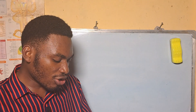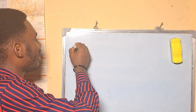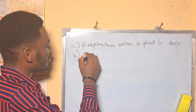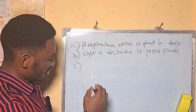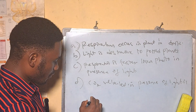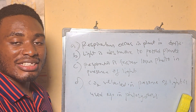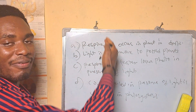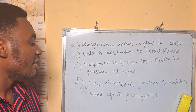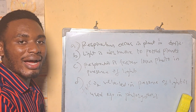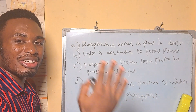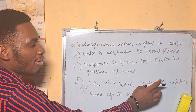Investigation of respiration in green plants is carried out in the dark because — A: respiration only occurs in plants in the dark, B: light is destructive to plant products, C: respiration is faster than photosynthesis in light, D: CO2 released in the presence of light is used for photosynthesis. The answer is D — if the experiment is done in light, the CO2 produced will be used up in photosynthesis, altering the whole experiment. It must be done in the dark so CO2 is not consumed by photosynthesis.